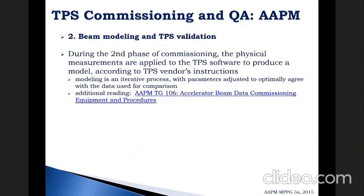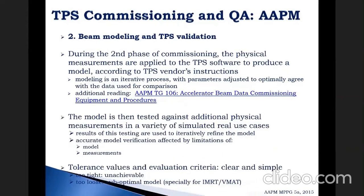The second phase is beam modeling and TPS validation, where physical measurements are applied to TPS software to produce a model per the vendor's instructions. Modeling is an iterative process with parameters adjusted to optimally agree with comparison data. Once created, the model is tested against additional physical measurements in simulated real use cases, and results are used to iteratively refine the model. Tolerance values and evaluation criteria should be clear: if too tight they may be unachievable, but if too loose they may lead to suboptimal models, especially for IMRT and VMAT.